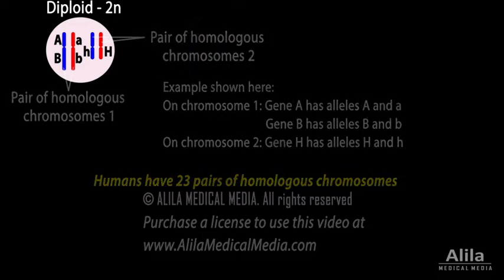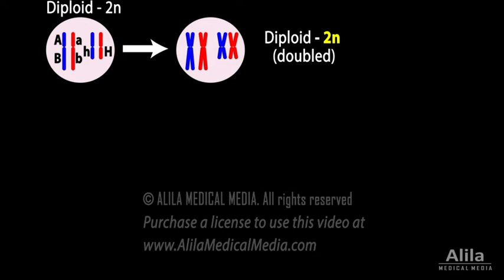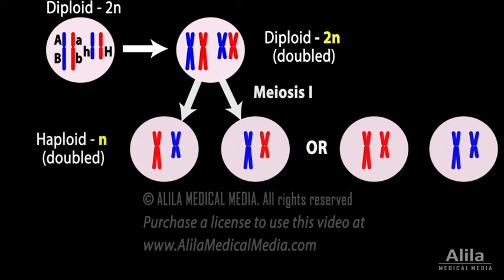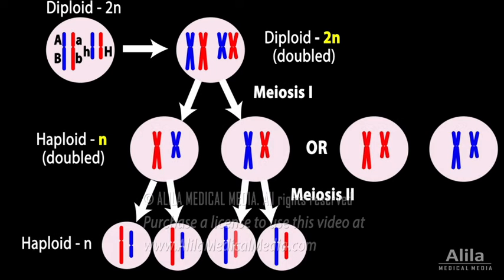Meiosis is preceded by one round of DNA replication but involves two rounds of division: meiosis 1 and meiosis 2. The result is the formation of four haploid daughter cells. They contain only one copy of each chromosome, or one set of chromosomes, meaning one allele for each gene.